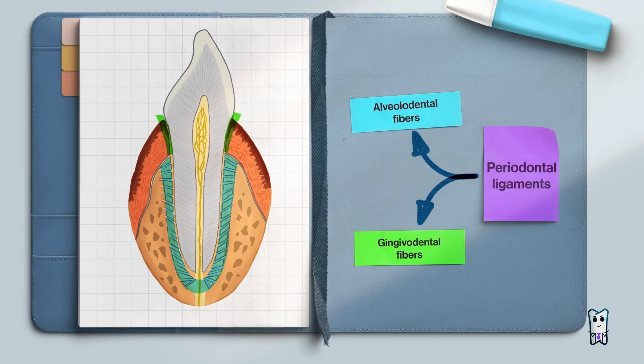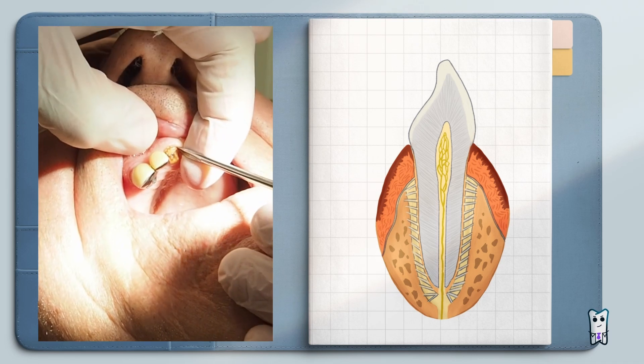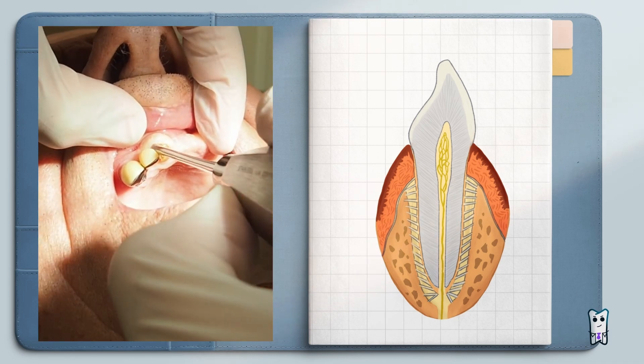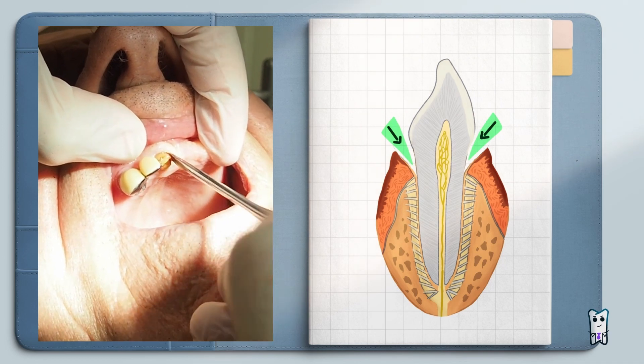Syndesmotomy is the first step of the extraction process. It aims to sever the gingival dental ligaments, or simply said, to loosen the soft tissues attached all around the tooth. It's really useful to check if the anesthesia is good enough, and secondly, to create space for the optimal positioning of the elevator.